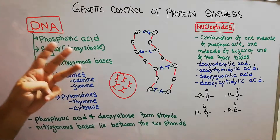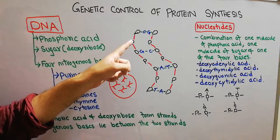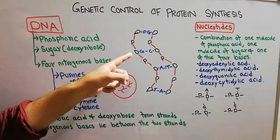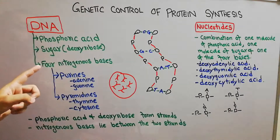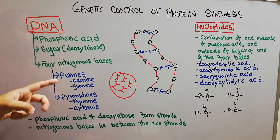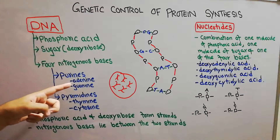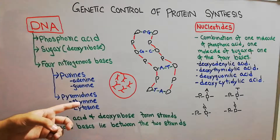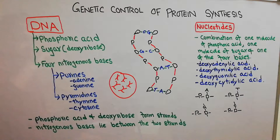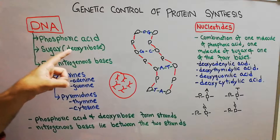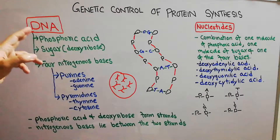There are three important components of DNA. One is phosphoric acid, denoted by P. Another is deoxyribose sugar, denoted by D. And there are four nitrogenous bases. The four nitrogenous bases are divided into two groups: purines, which consist of adenine and guanine, and pyrimidines, which consist of thymine and cytosine. Since it is DNA, the sugar is deoxyribose — deficient in oxygen. If not deficient in oxygen, it is RNA.